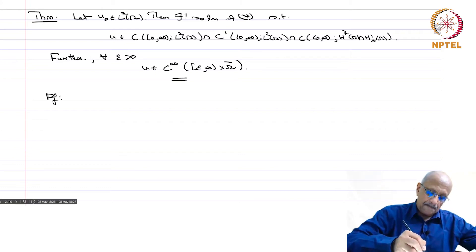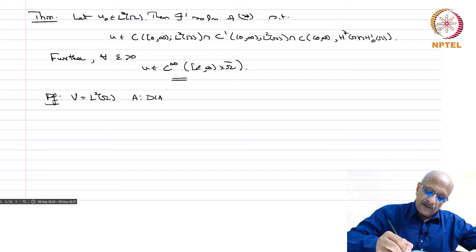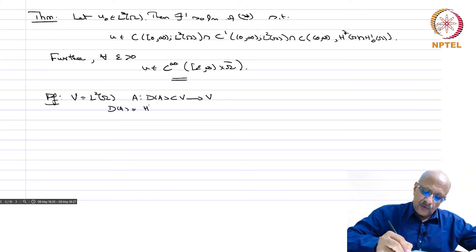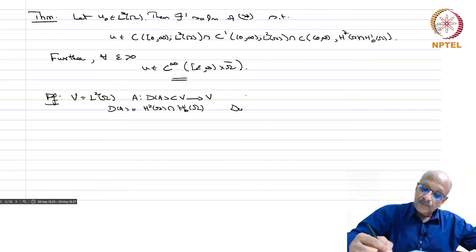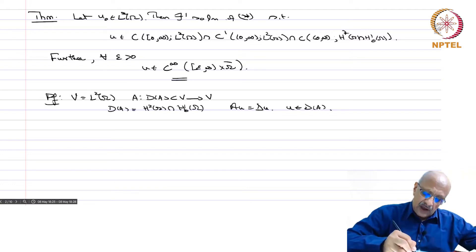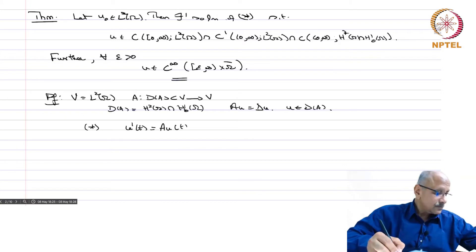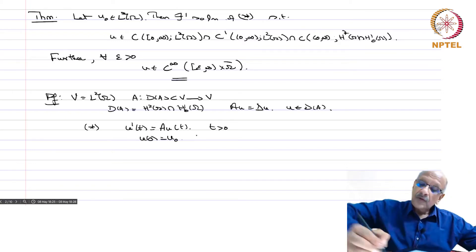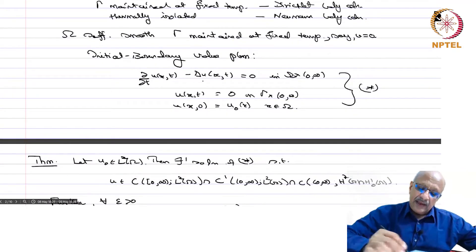Proof. Take V equal to L^2(omega) as our Hilbert space. Define the operator A with domain D(A) contained in V, where D(A) equals H^2(omega) ∩ H^1_0(omega) and Au equals Laplacian of u for u in D(A). Then the heat equation can be written as u'(t) equals A u(t) for t positive, and u(0) equals u_0. This is the equation du/dt equals Laplacian u, so u'(t) equals A u(t), with u belonging to H^1_0.